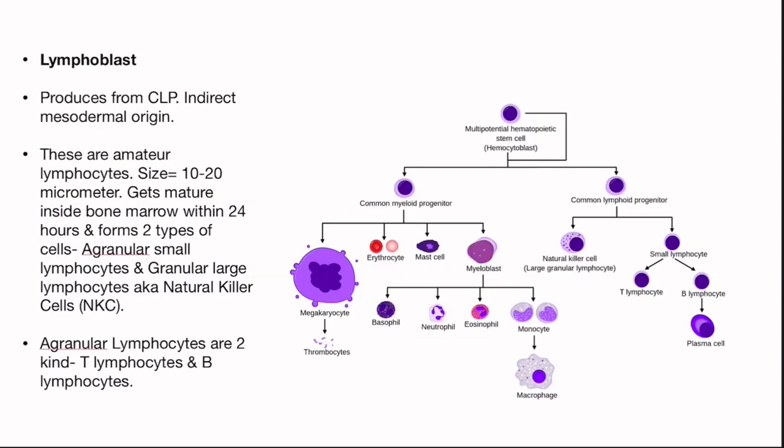The lymphoblast is produced from the CLP (common lymphoid progenitor cells). As you know, the entire hematopoietic stem cells originate from the mesoderm, so we can say these cells have an indirect mesodermal origin. These cells are actually immature lymphocytes, and their size is 10 to 20 micrometers.